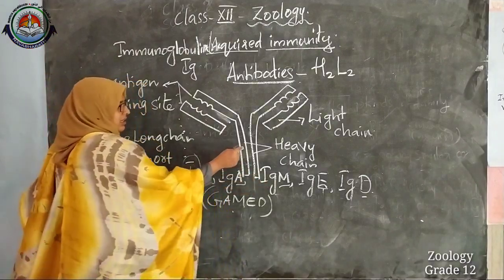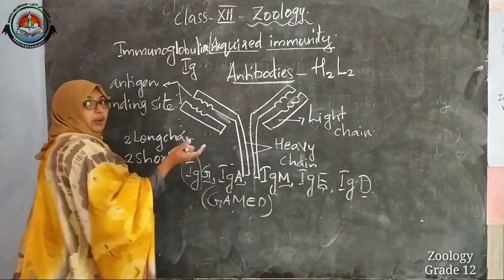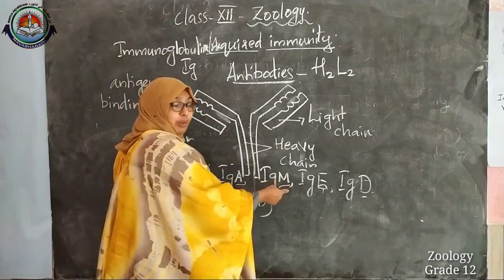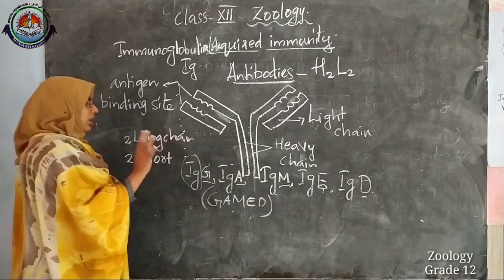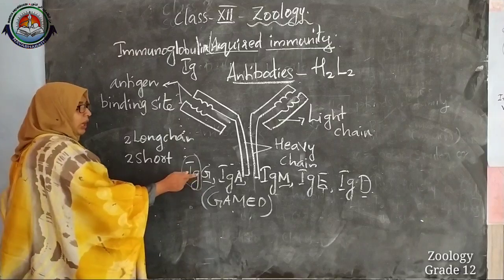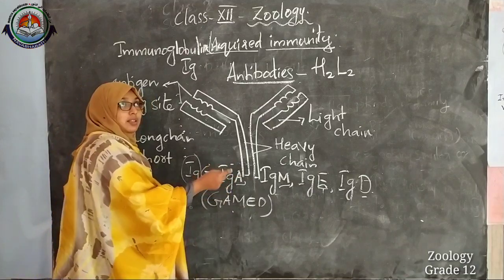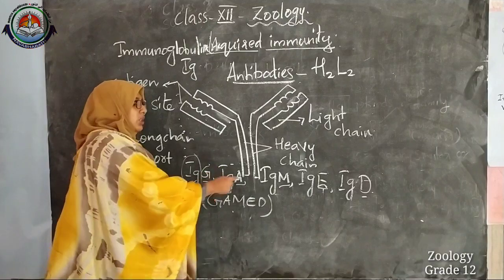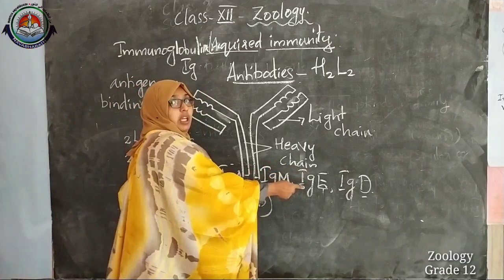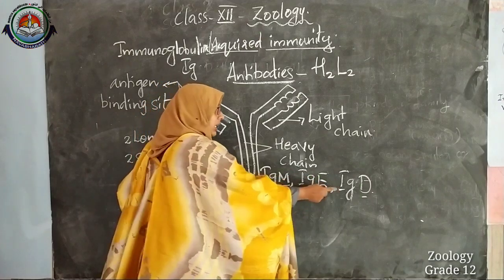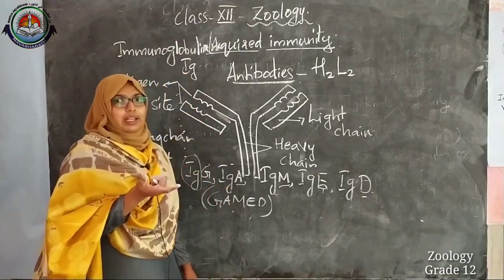The antibodies differ in their heavy chains. In IgG, the heavy chain is made up of gamma; in IgM, it is mu, and so on. IgG is the common antibody, whereas IgA is seen in our serums. IgM is seen in blood, IgE is produced in response to allergy, and IgD helps to activate B cells for the defensive mechanism.